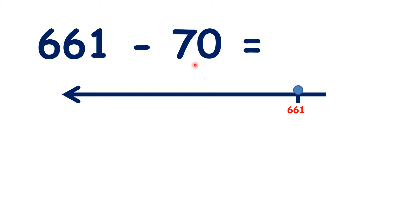So pause the video and see if you can work out 661 minus 70. Well, if we subtract 60, that takes us to 601, because we know that 66 minus 6 is 60. So now we've subtracted 60, so we need to subtract another 10, and that takes us to 591, because we know that 60 minus 1 is 59.